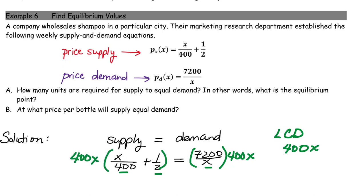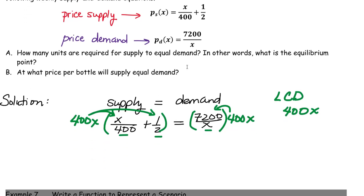Because when you multiply on both sides, you have to distribute to every single term. And when you multiply a whole number times a fraction, it goes into the top of the fraction. So what that's going to look like is 400X squared, when you multiply 400X times X over 400, plus 400X, because 400X times 1 is just 400X over 2, equals 7200 times 400X.